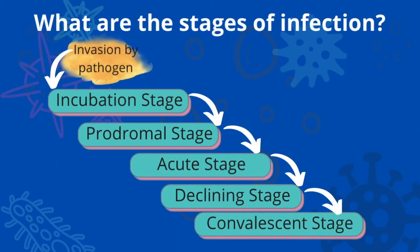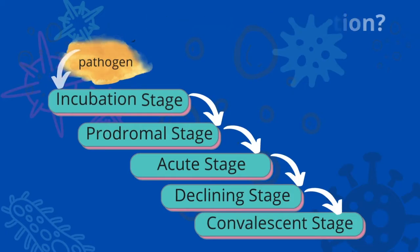The following are the stages of infection. The moment we expose ourselves to someone who is infected, there is invasion of the pathogens. So there are stages you go through when you get sick. It starts with the incubation stage, prodromal stage, acute stage, declining stage, and the convalescent stage.